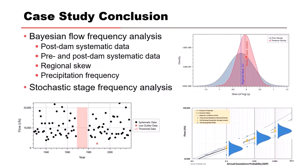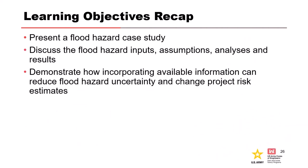To bring it all to a close, this case study illustrated by example how incorporating each piece of additional information reduces uncertainty and reduced the AEP estimates of the PMF, which were driving the project risk. The original screening level analysis used limited systematic data and an outdated regional skew analysis, which resulted in unacceptable and actionable overtopping risk that could have led to an expensive dam safety modification. But by incorporating available information and using existing modeling, we reduced the estimated project risk to a tolerable level and eliminated the need to do a dam safety modification. We presented our flood hazard case study, discussed the inputs, assumptions, analysis and results, and demonstrated how incorporating available information can reduce our uncertainty and potentially change our project risk estimates.